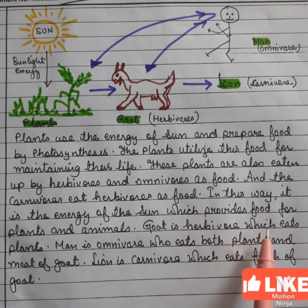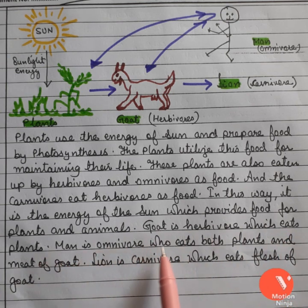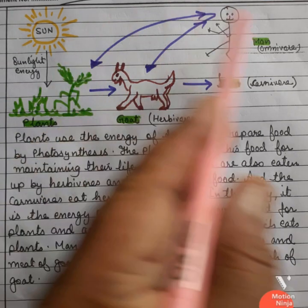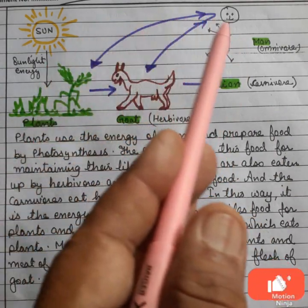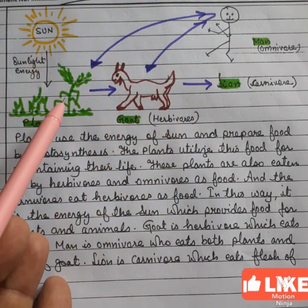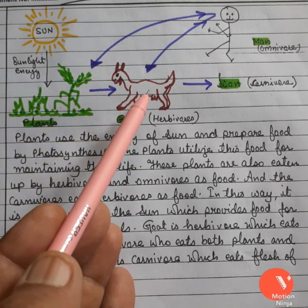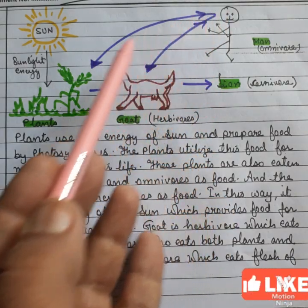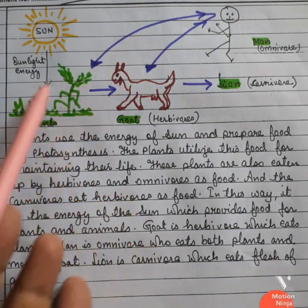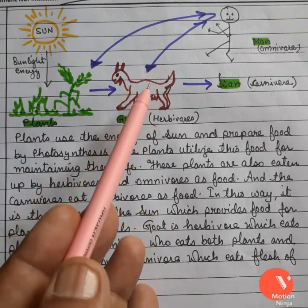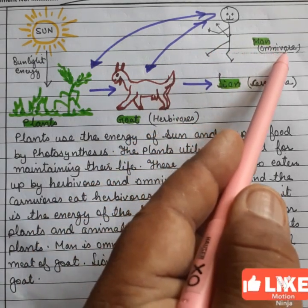Goat is a herbivore which eats plants. Man is an omnivore who eats both plants and meat of the goat. Lion is a carnivore which eats the flesh of goat. This is the way through the diagram we have explained how different organisms depend upon different types of food. Sunlight falls on the leaves and trees, so tree leaves are eaten by goat, and that goat is eaten by lion. Man is omnivore — he can eat grasses, leaves, and fruits given by trees, and he can also eat herbivores like goat, sheep, as food. So he comes under the category of omnivores.